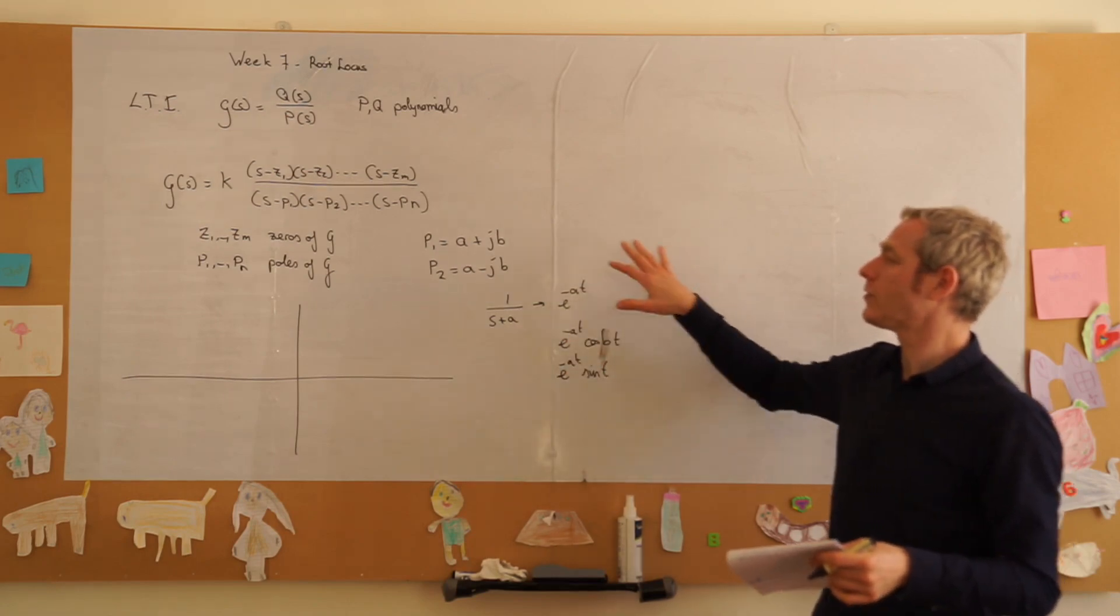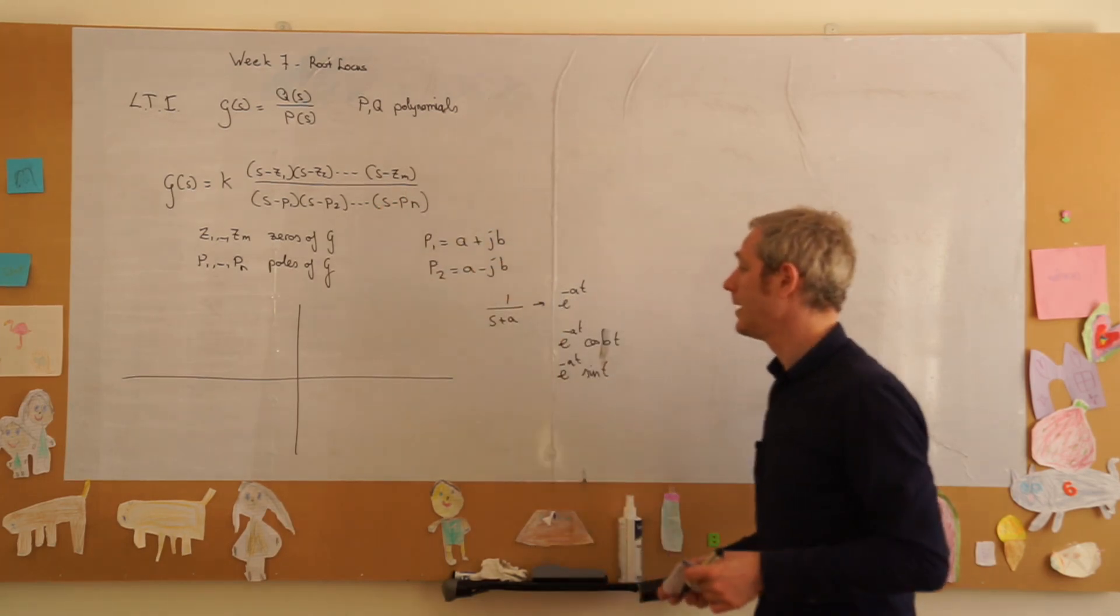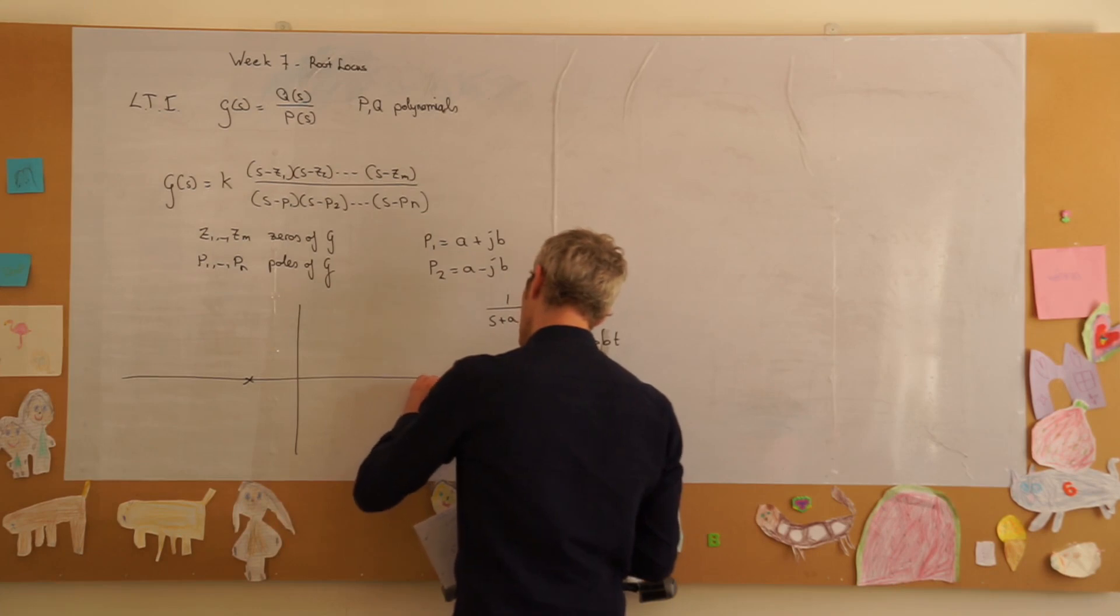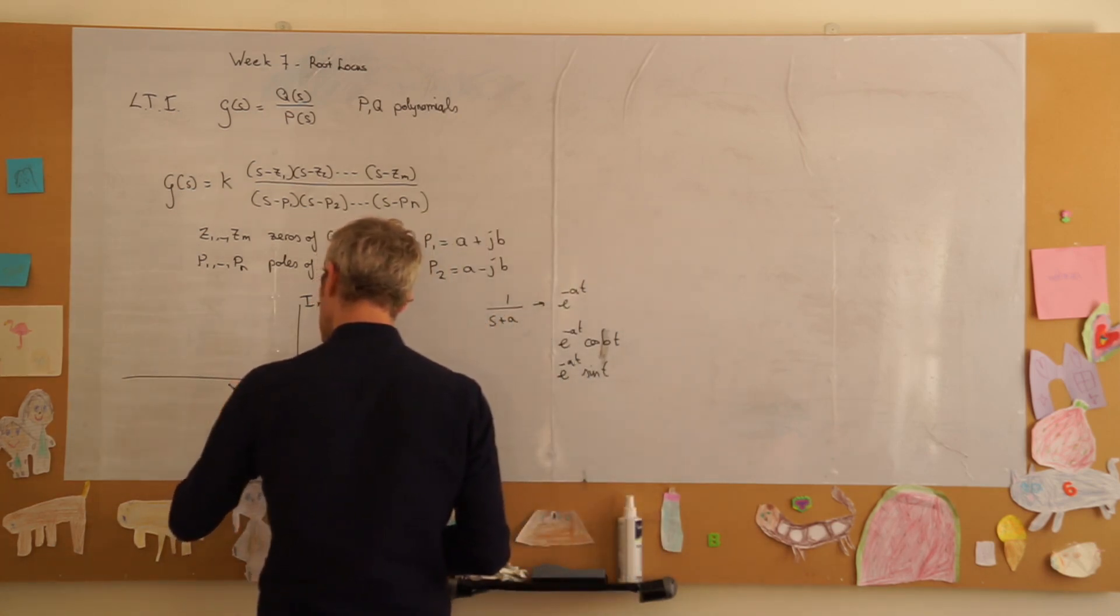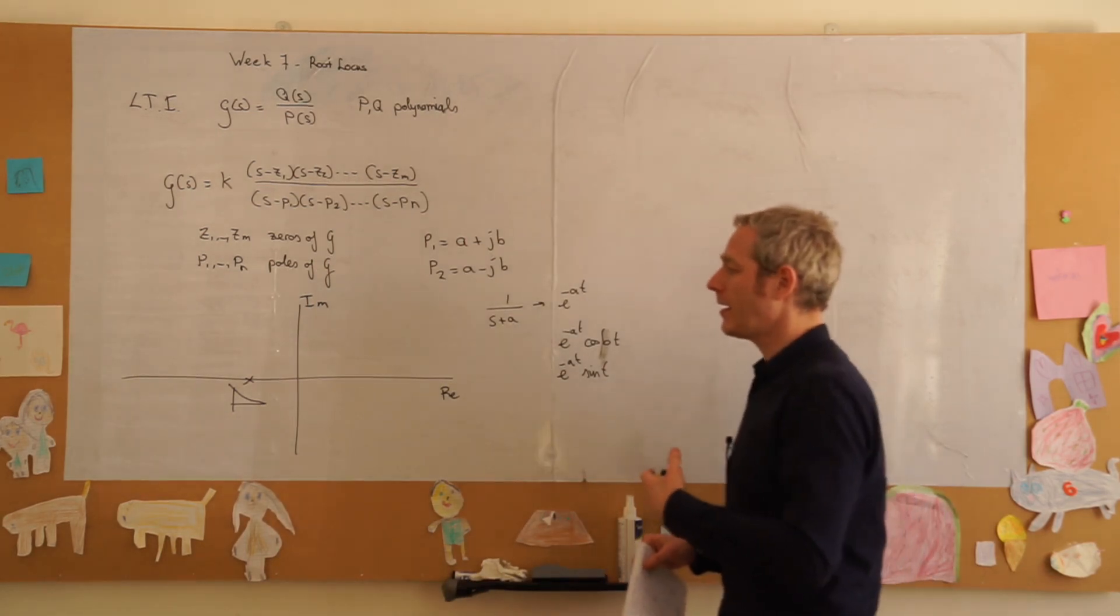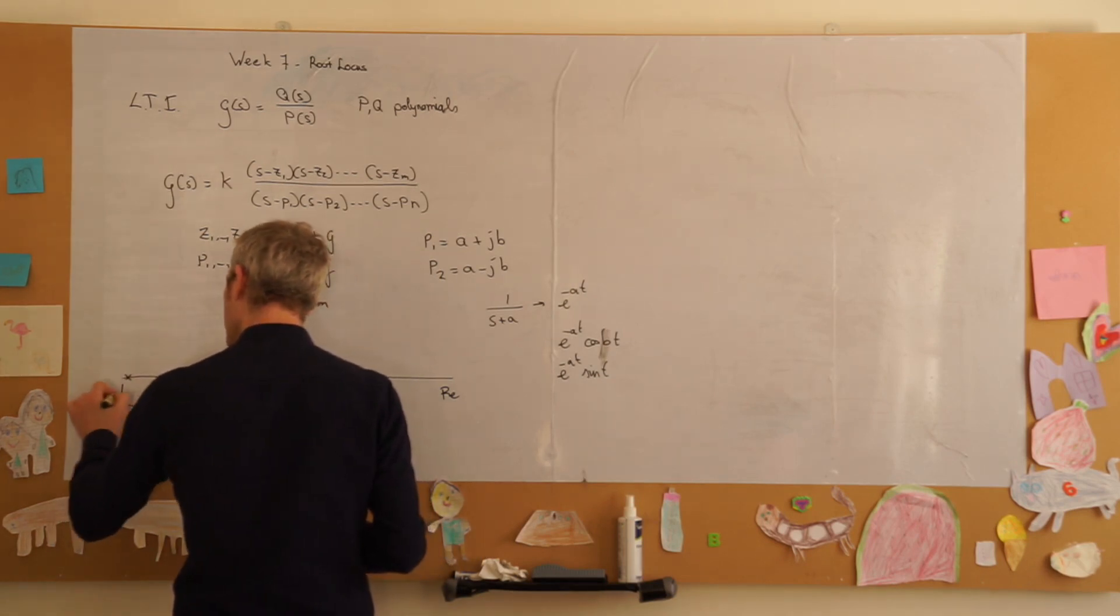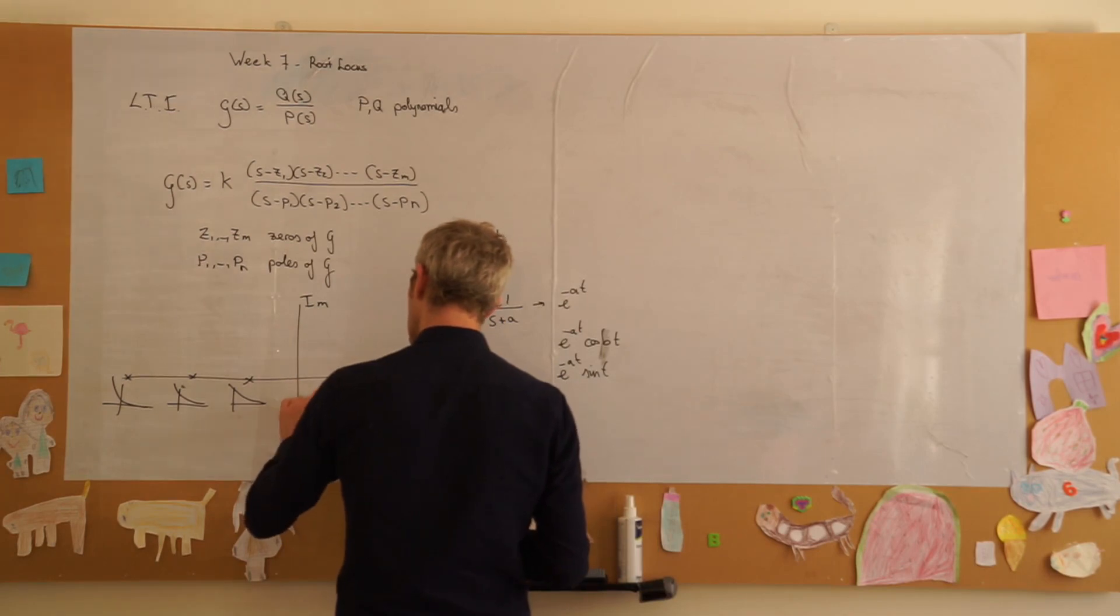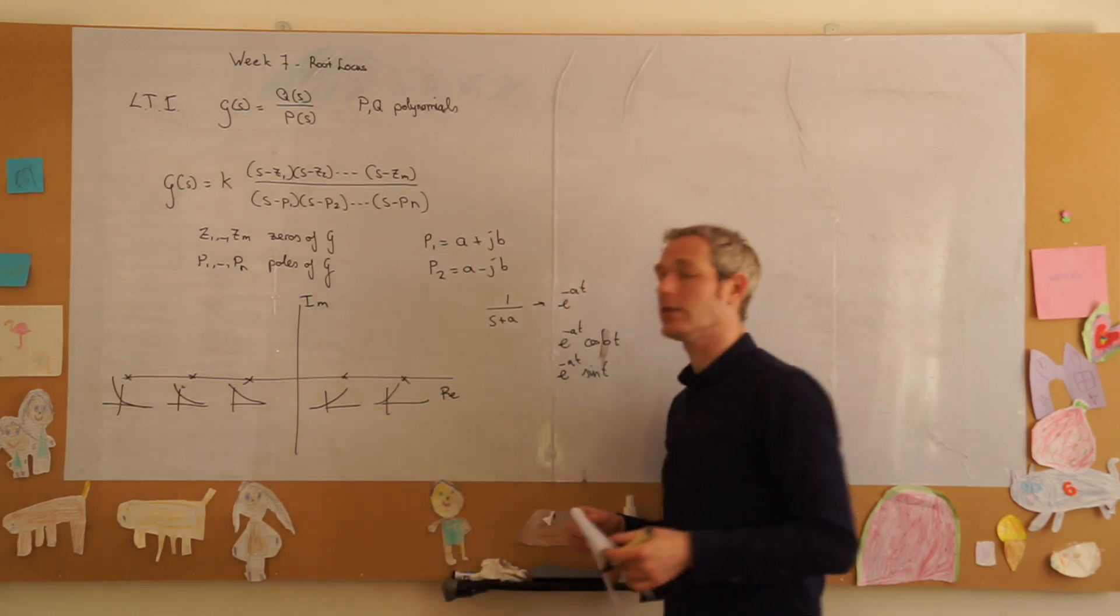So these are the functions that resulted from partial fraction expansion of transfer functions. Now, let's look at the poles, because the poles determine our stability. If we have a pole on the negative real axis, we know we have exponential decay. So we have a function that decays exponentially. Now, the further that pole lies on the real axis, the faster that exponential decay will be. And conversely, if it's on the positive real axis, then we will have exponential growth. And the further it is on the positive real axis, the faster that exponential growth will be.